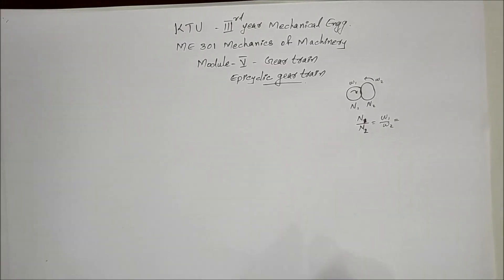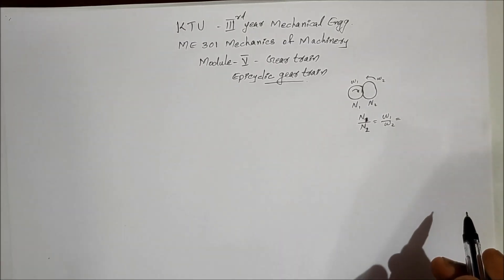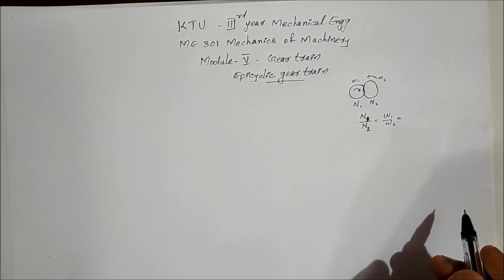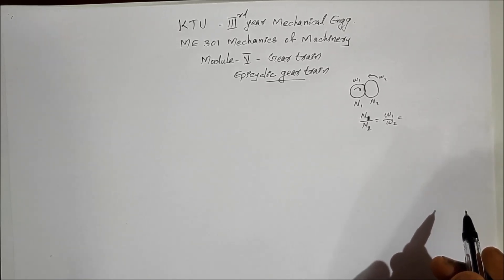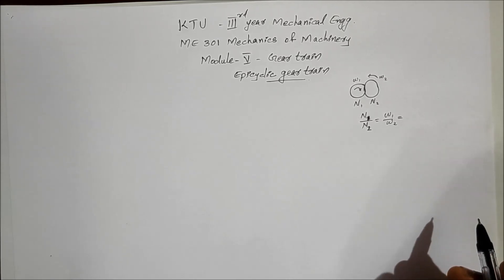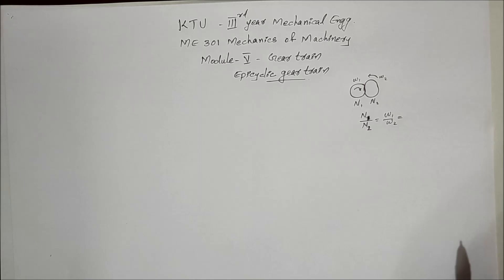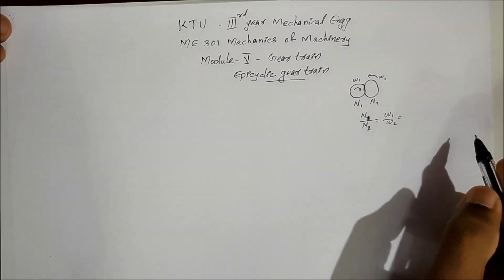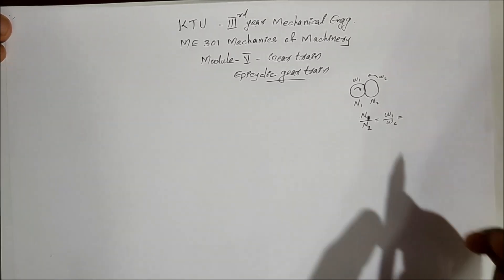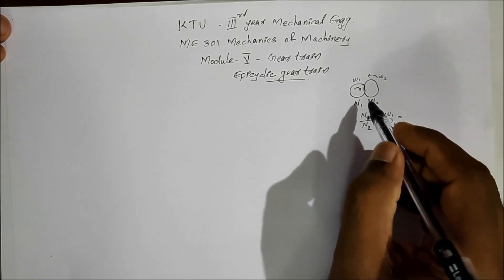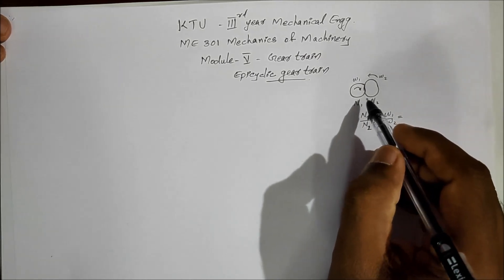Welcome to my first topic in mechanical engineering — ME 301, Mechanics of Machinery, K2 syllabus, Module 5. The topic is gear trains, and the first subtopic is the epicyclic gear train.